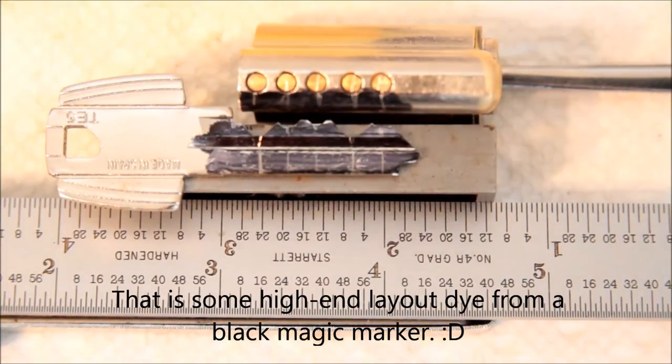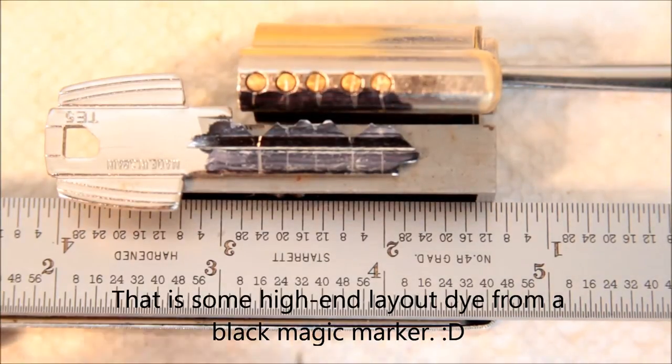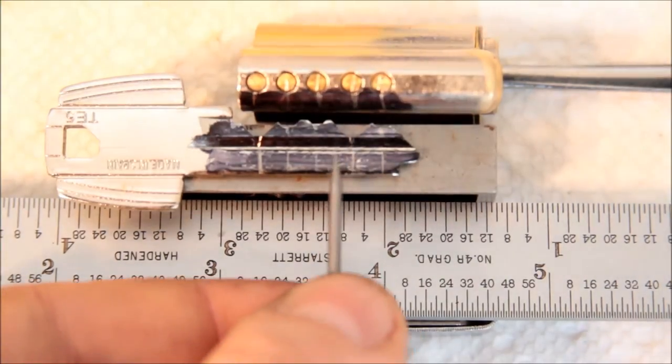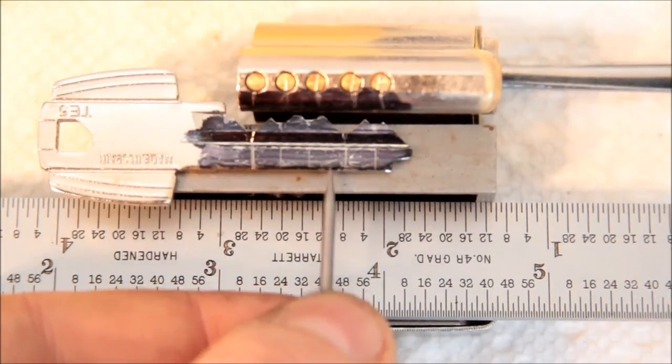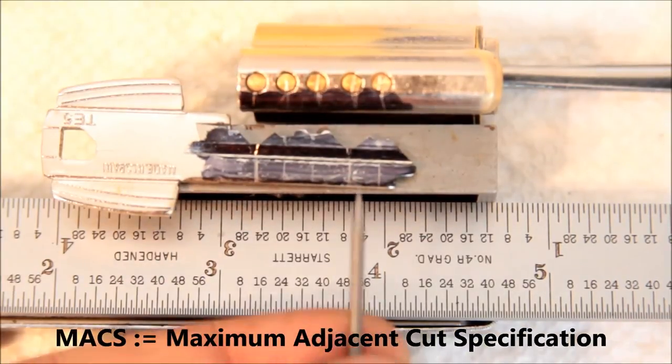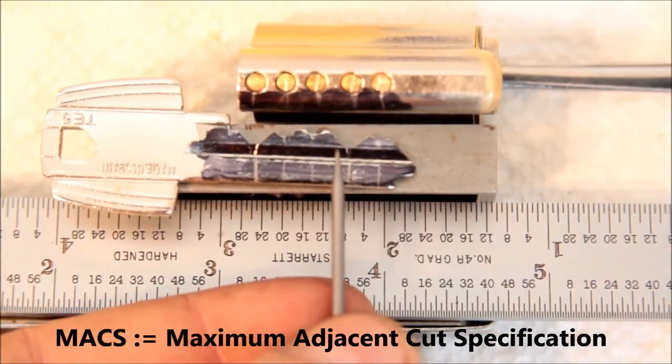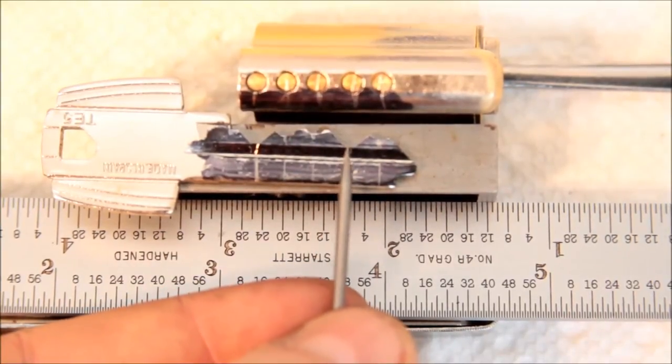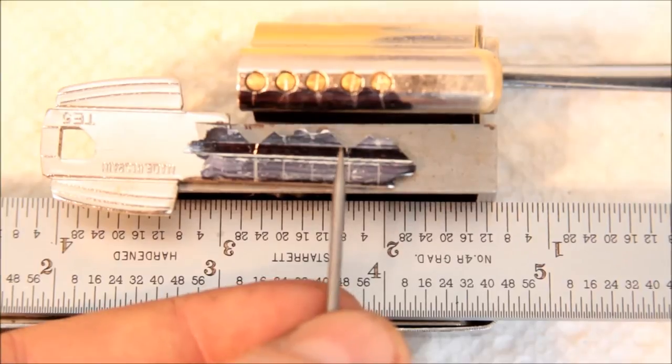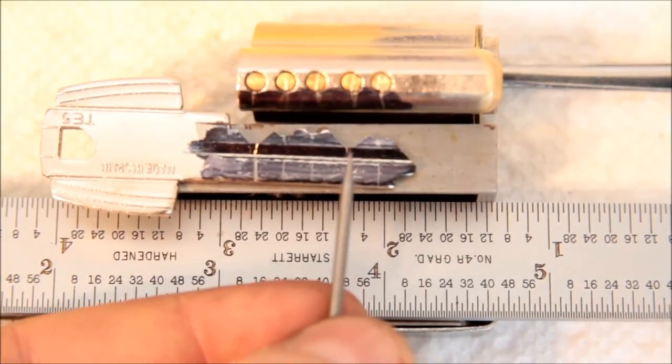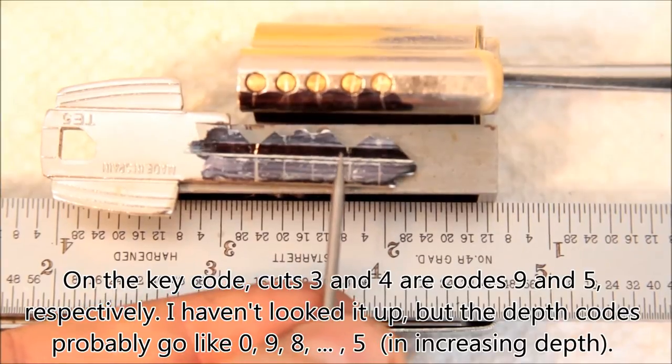Now, why would they do this? I don't think it's a manufacturing defect. It's too big of a difference to be unintentional. I think what it is is that it increases the maximum adjacent cut specification for this spacing here between pins 3 and 4. And it allows them to have this cut way down here. So that's like a cut down to the ward. That's probably a maximum depth cut.